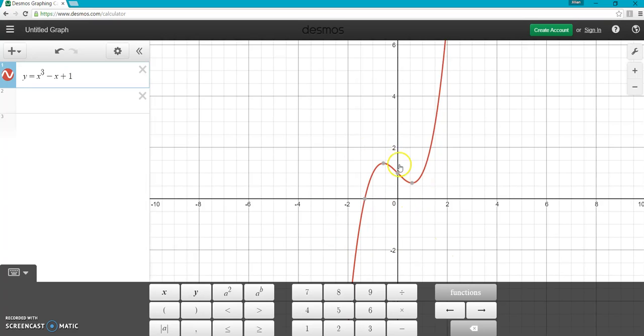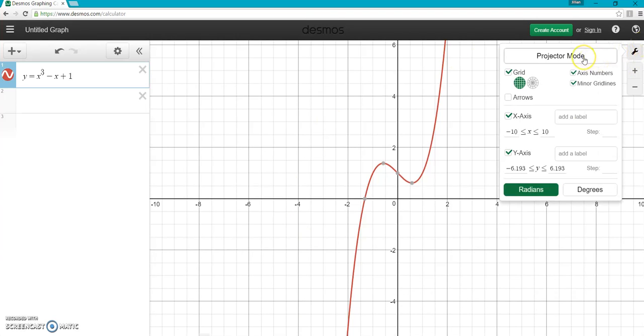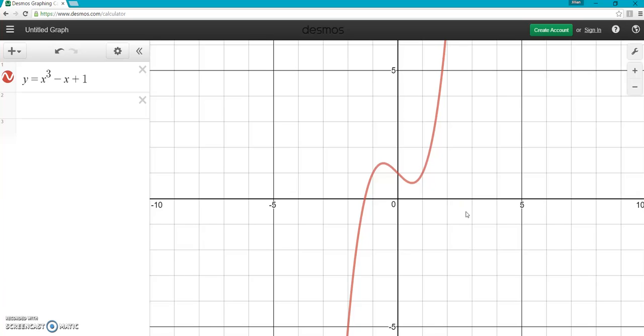Now we have this cubic function, and we want to find where this function equals 0. That's the same thing as saying where are the y's equal to 0. When you're looking at a graph, when are the y's equal to 0? The y-axis is 0 right here at the x-axis.